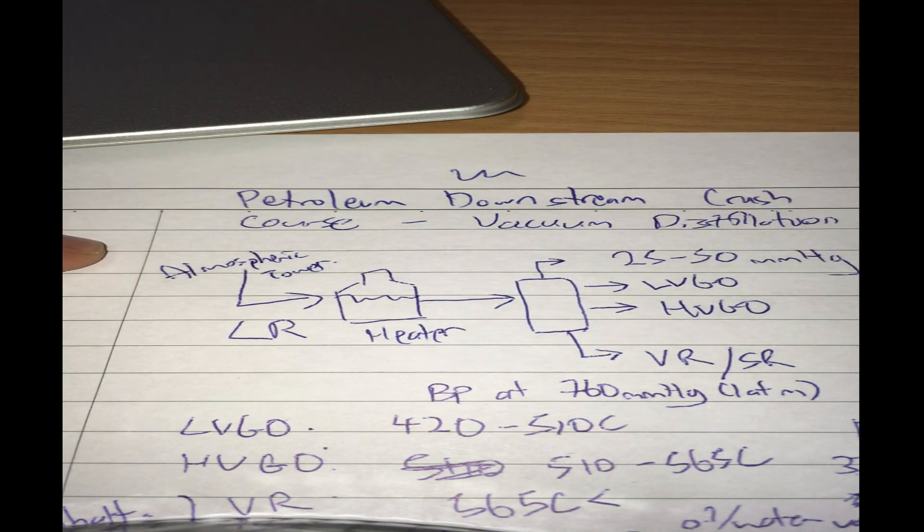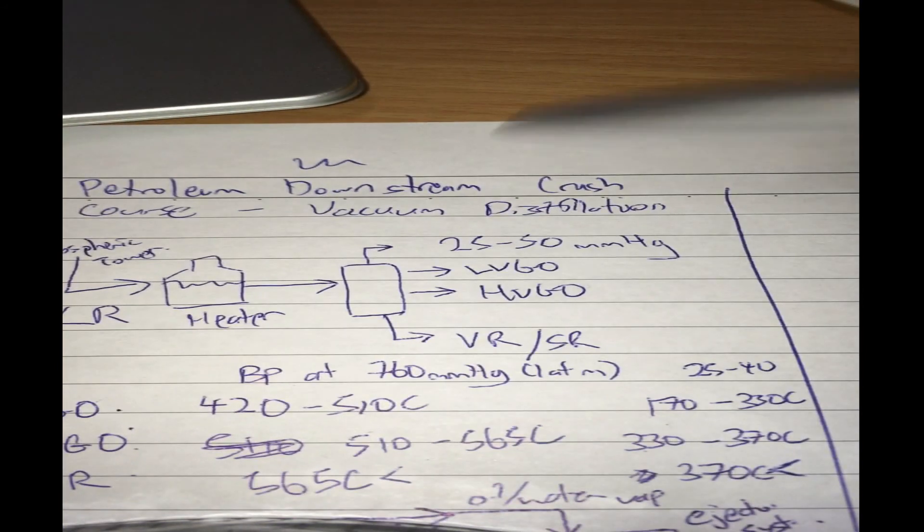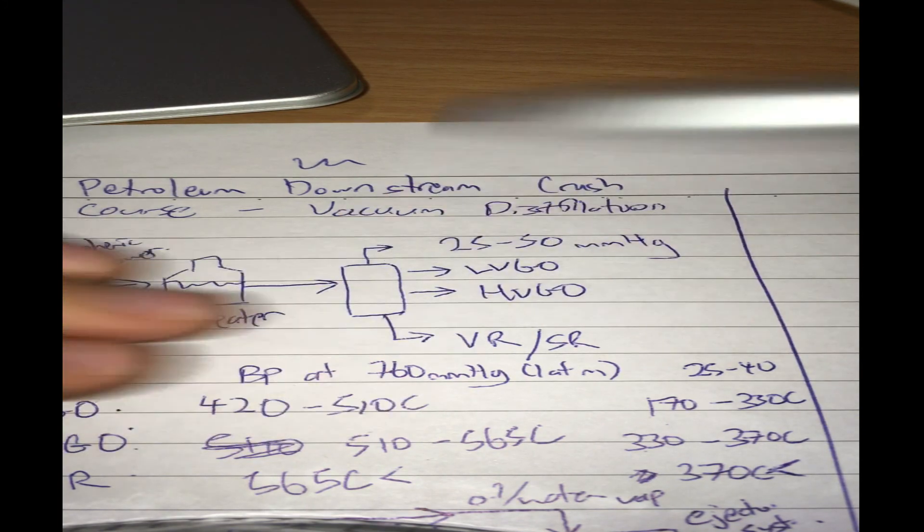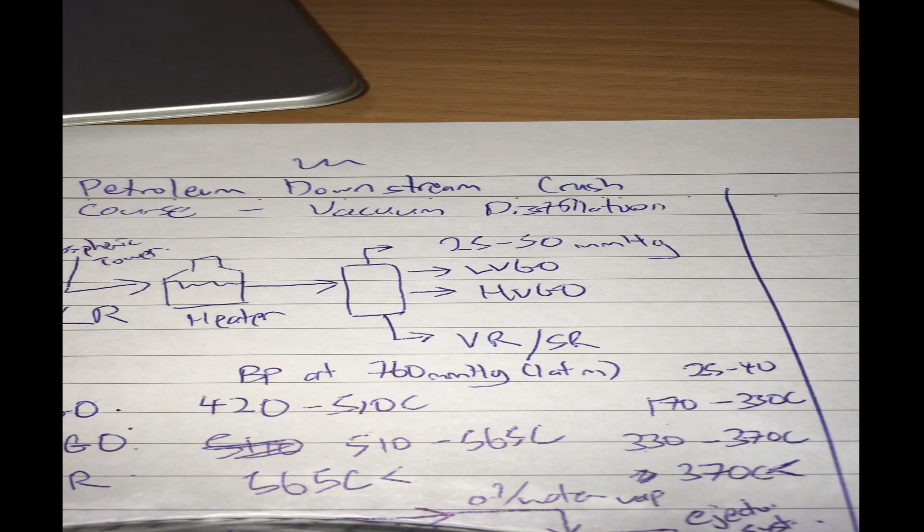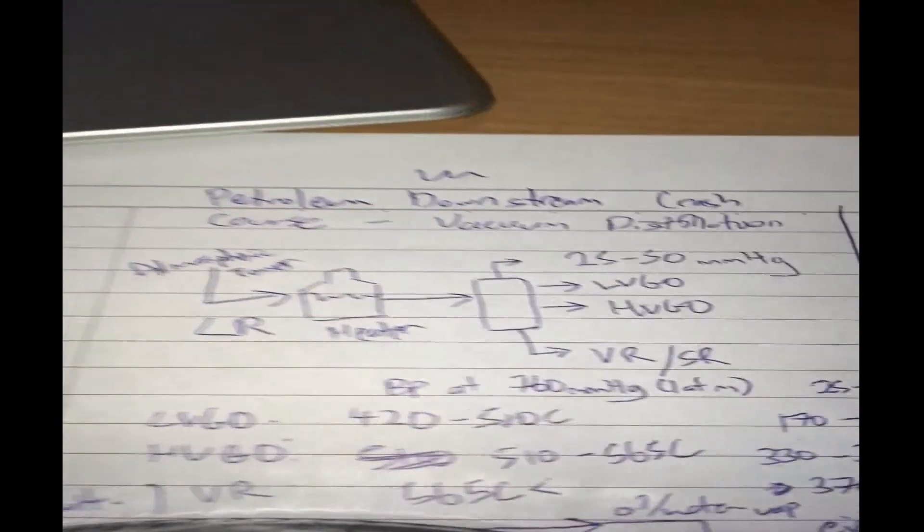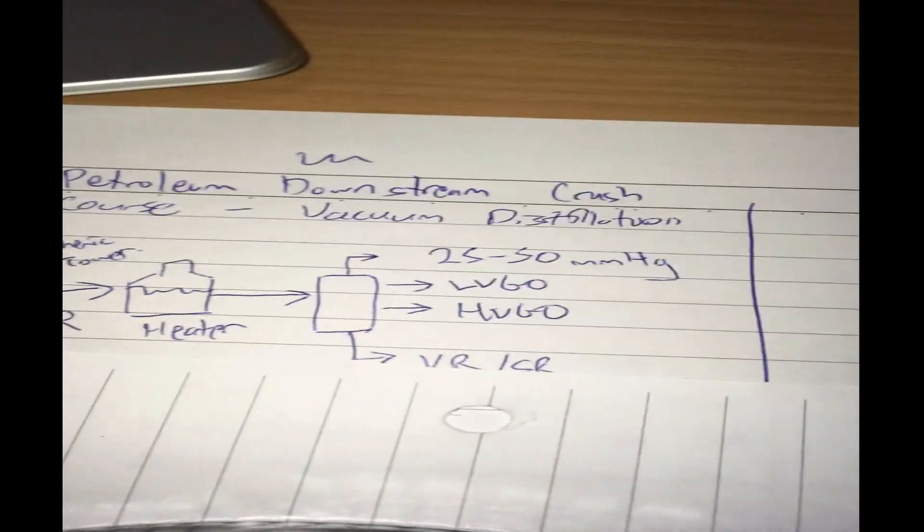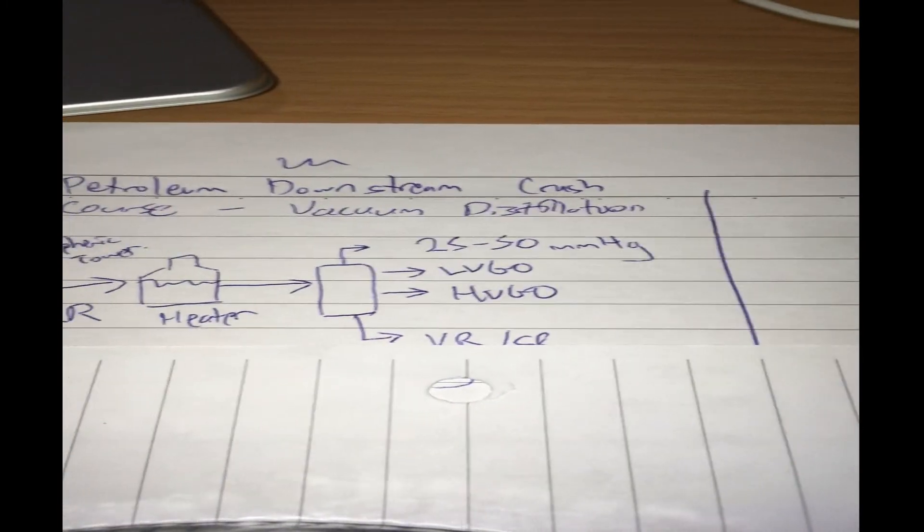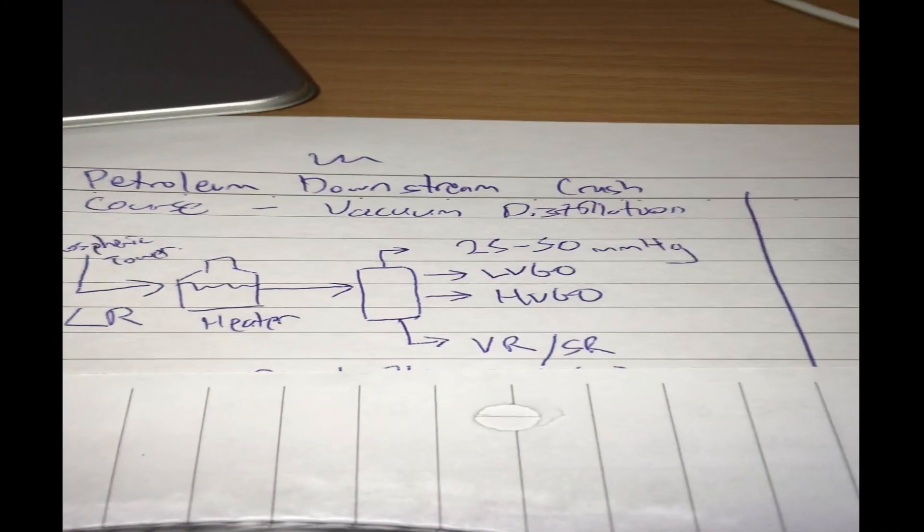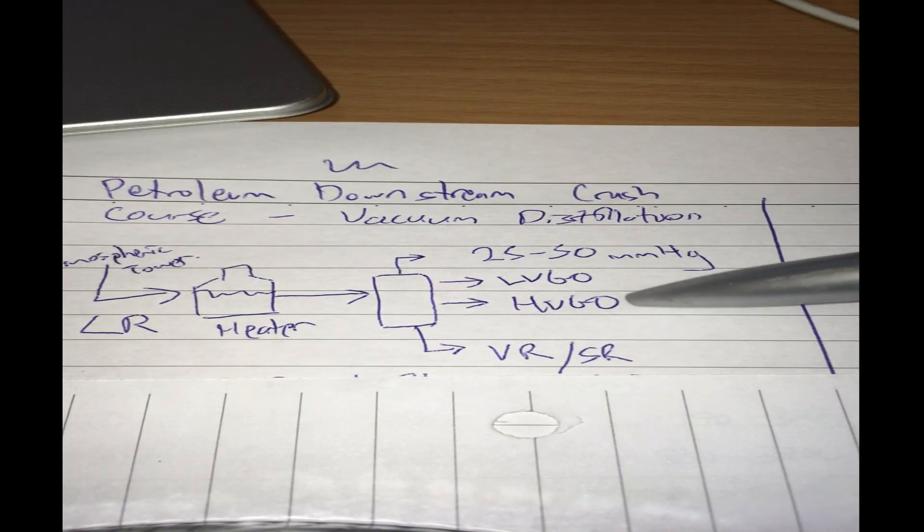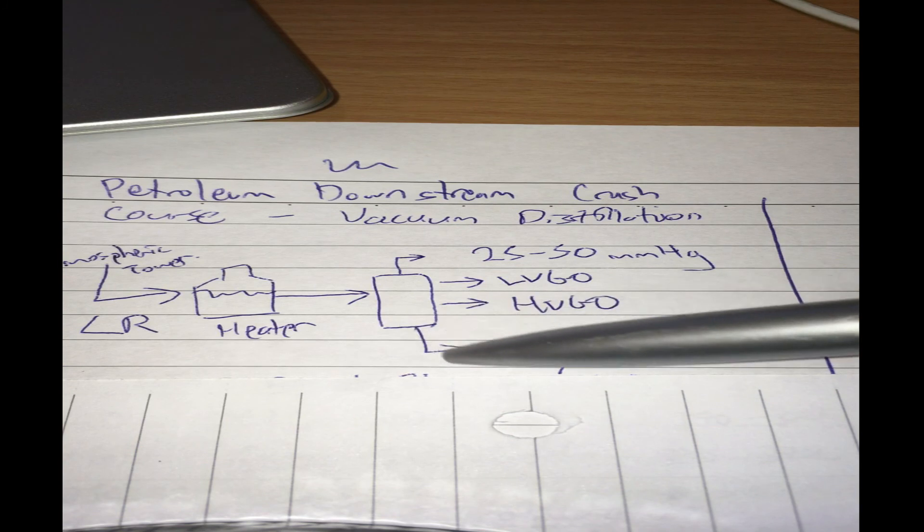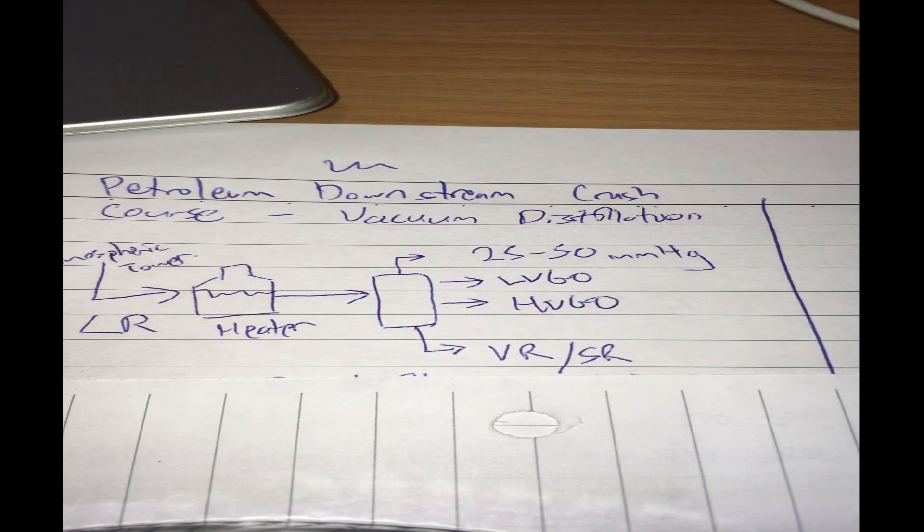What we're going to do with it is send it to a vacuum distillation tower. What happens in this vacuum distillation tower is you heat up the long residue and send it to the vacuum distillation tower.